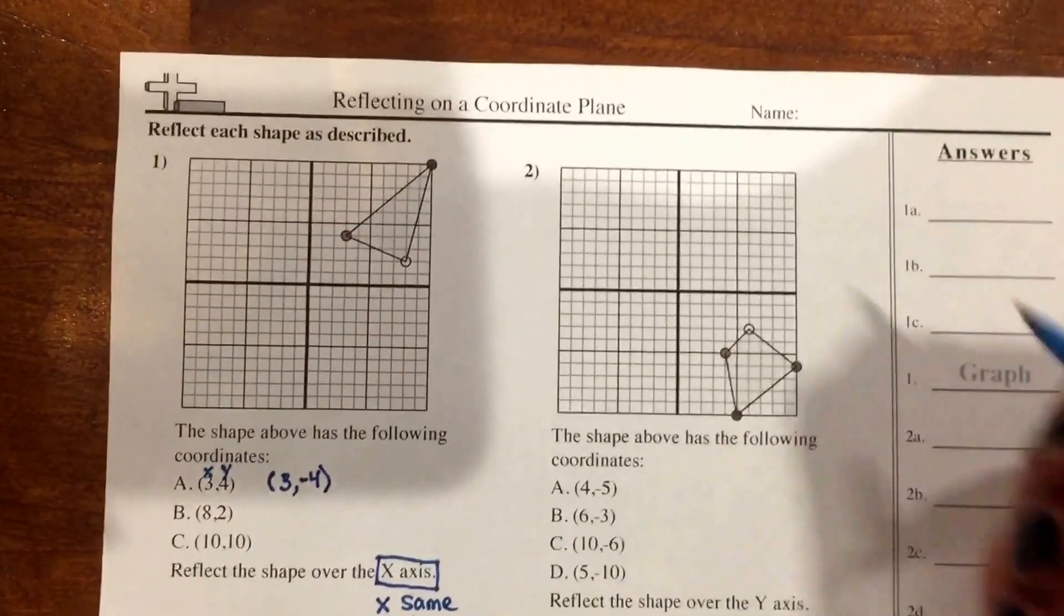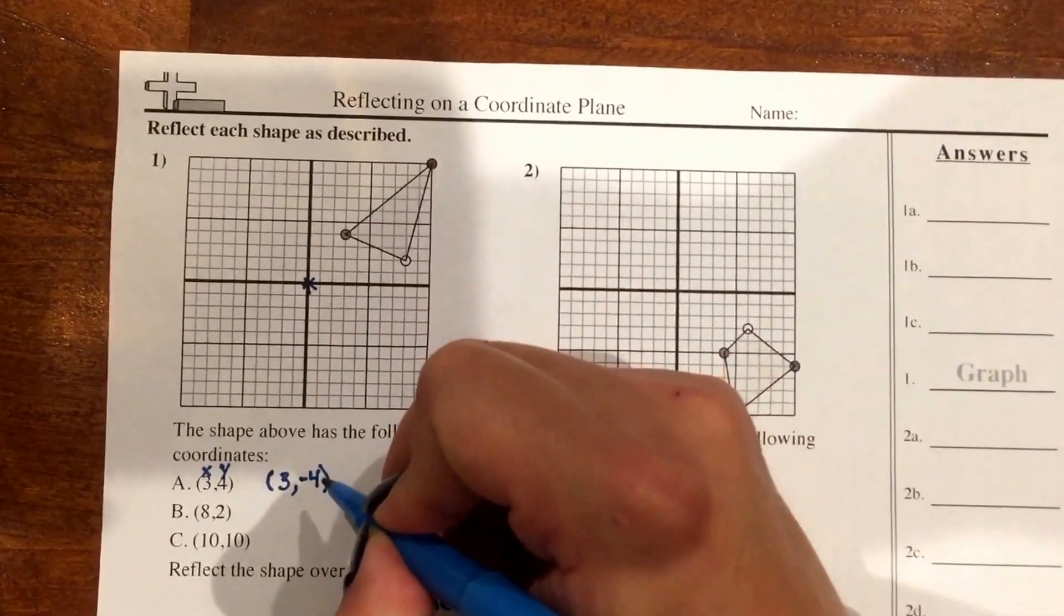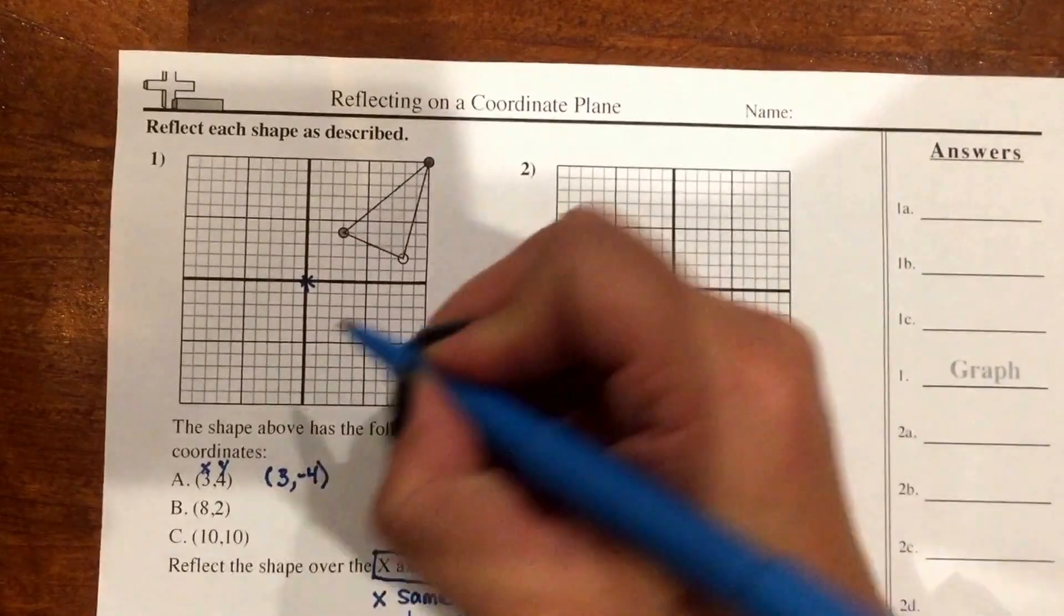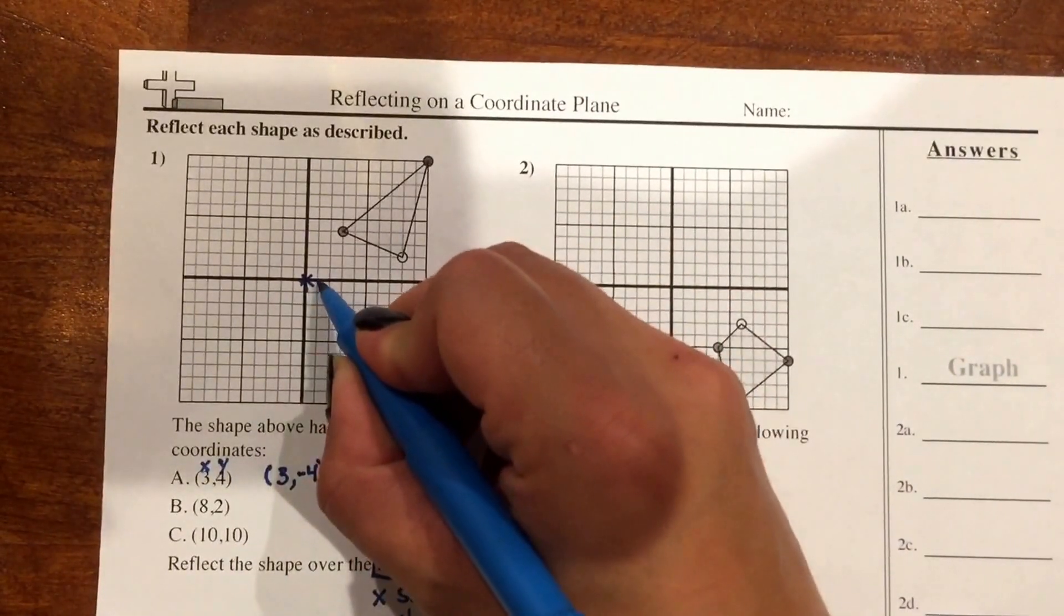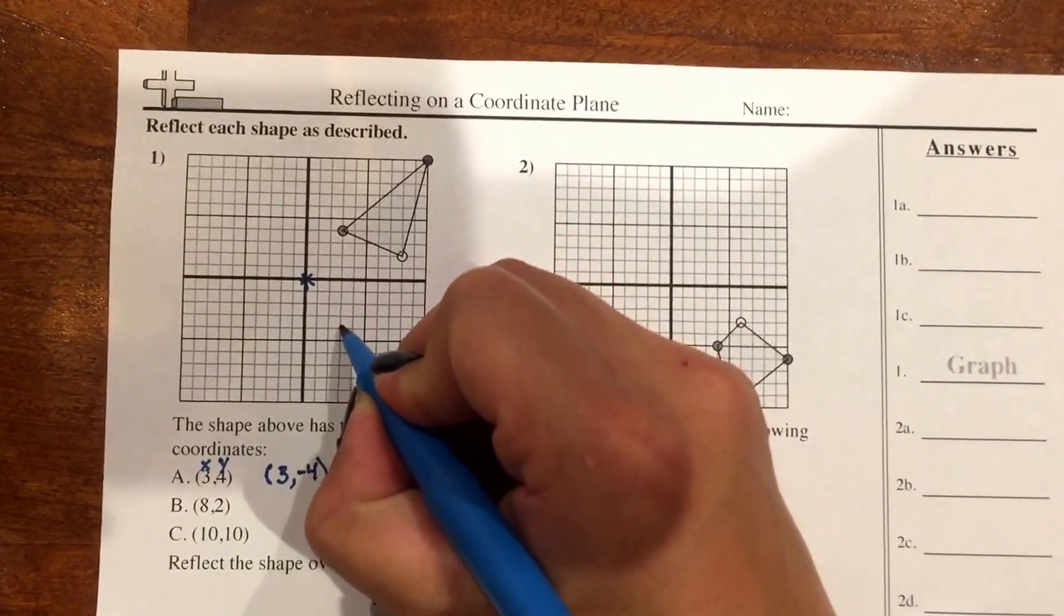And I'm going to go ahead and graph that in my graph. So I'm going to start at my origin, and I'm going to graph my reflected point of (3, -4). So I'm going to go over 3, and down 4.